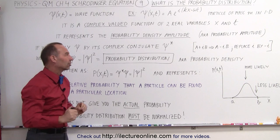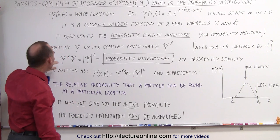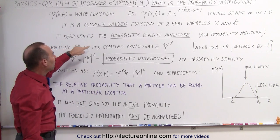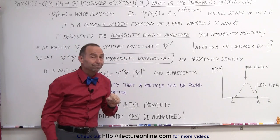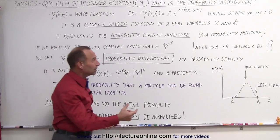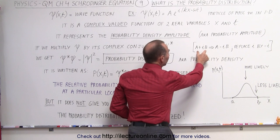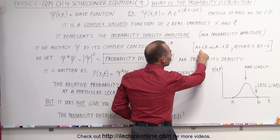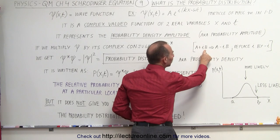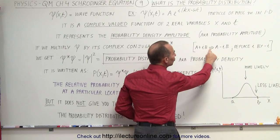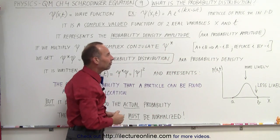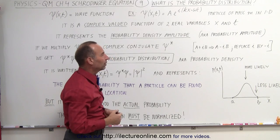How do we get that direct connection? To do that, we have to multiply the wave function by its complex conjugate. What's a complex conjugate? Well, you take an imaginary number and you change the sign of the imaginary part. So we have a real part and an imaginary part. If you change the sign of the imaginary part, you're taking the complex conjugate of that imaginary number.